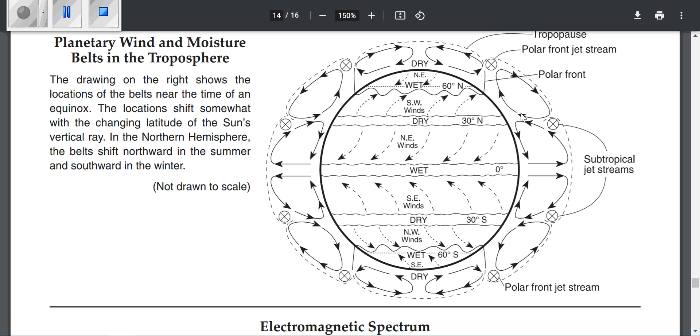This right here is the air on the surface of the Earth. It's not drawn to scale—the atmosphere is not this thick. But here's what happens, this is what this diagram is showing you.